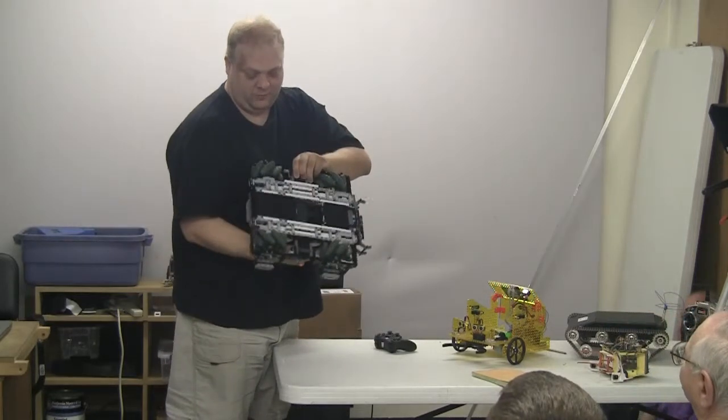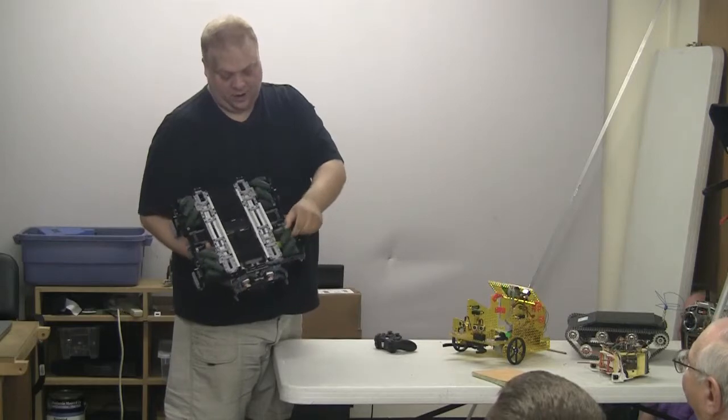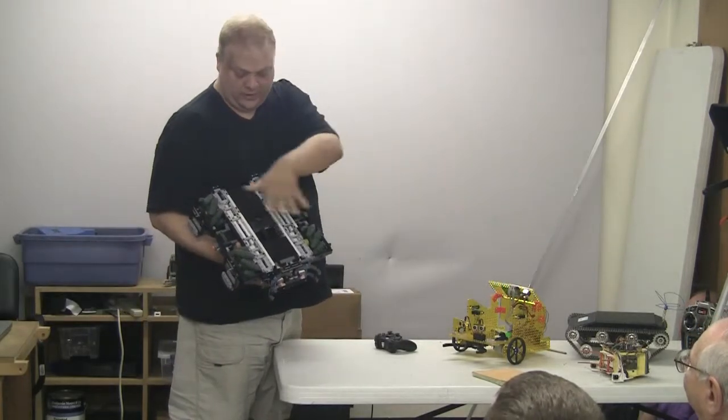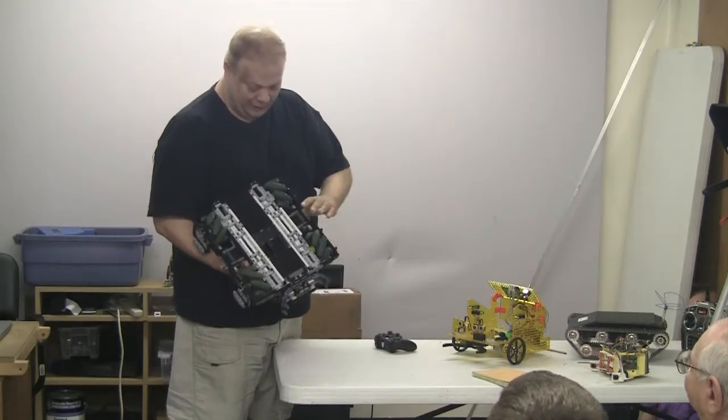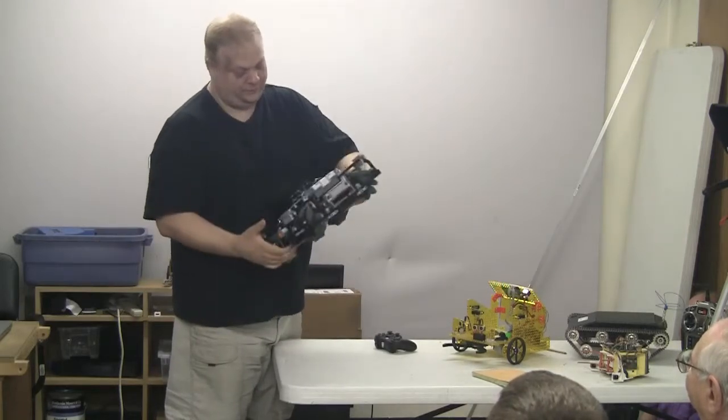So this one, I started with these, what they call meccanon wheels. These are omnidirectional wheels. They'll do left to right, spin, and go like a crab walk, back and forth. The entire chassis was built with Lego parts, for the most part.